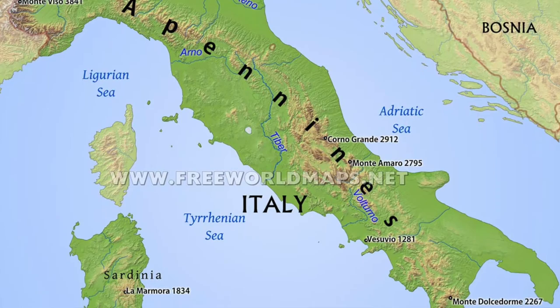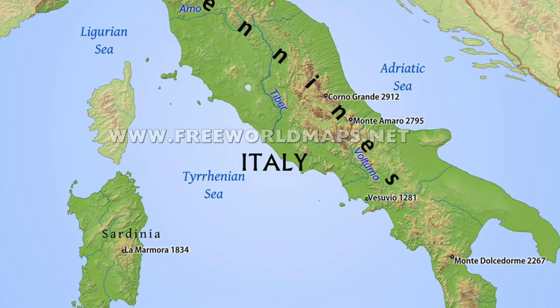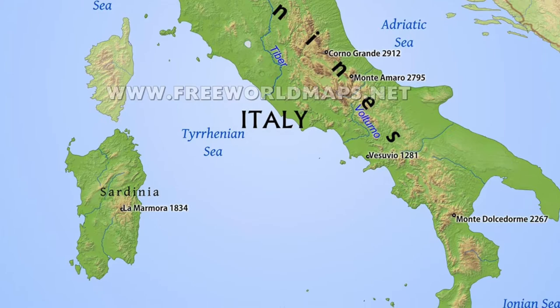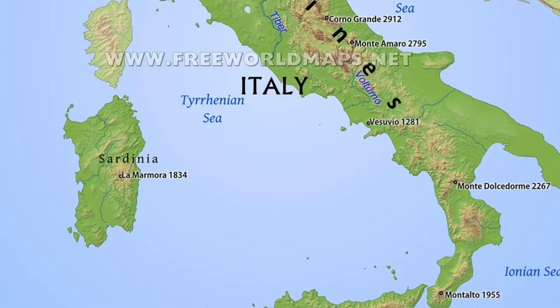There are also a couple of major mountain ranges: the Alps to the north and the Apennines, which run parallel down the entire middle of the country. Italy has major cities such as Rome, Milan, Florence, and Venice. And of course Sicily, its island, as well as Sardinia, another island. Corsica is actually owned by France, so it doesn't really count.